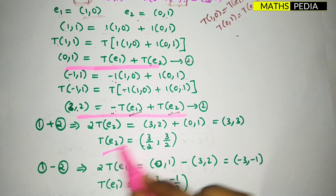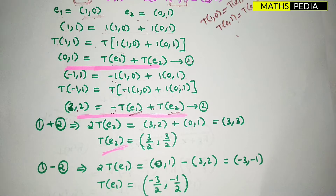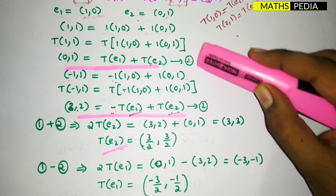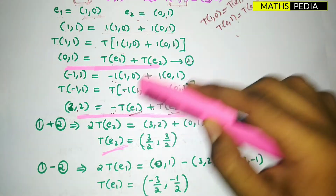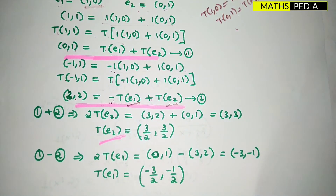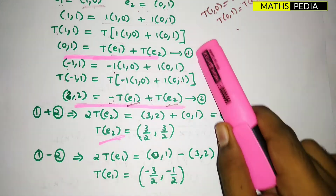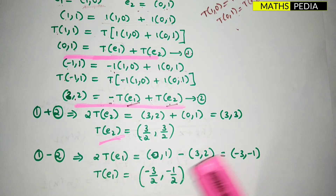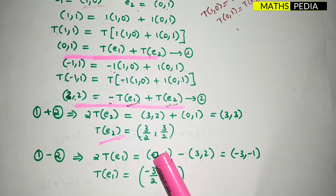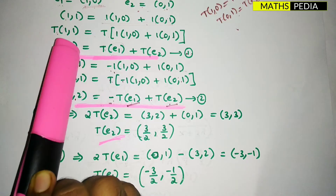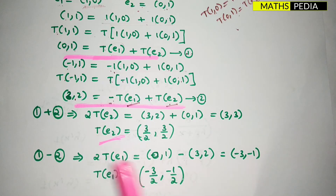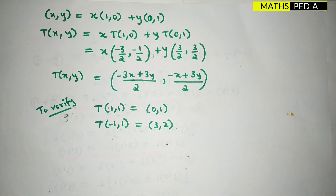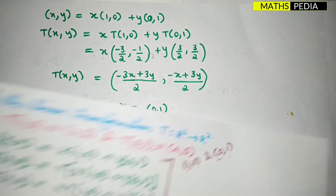To find T(e1), we subtract the second equation from the first. The T(e2) terms cancel, leaving 2·T(e1) = (0,1) - (3,2) = (-3,-1). Dividing by 2, T(e1) = (-3/2, -1/2).